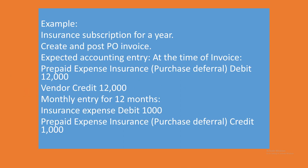Coming back to the presentation — next we will create a purchase order. For example, we are having insurance services for 12 months at 1,000 each per month. When we post the purchase invoice, the expected entry is: the prepaid expense insurance account — the deferral account — will be debited by 12,000. Then the deferral schedule for 12 months will debit insurance expense by 1,000 each month and credit the prepaid insurance expense account by 1,000.